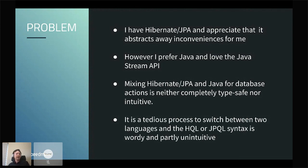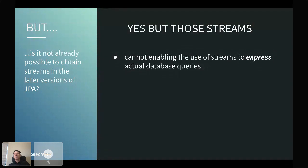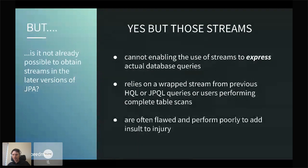So we started thinking: can we do this in a better way? You might think it's possible to obtain streams from JPA as-is — and in fact it is. You can write an expression and get a stream, but you can't express your query as a stream. What's already in JPA wraps a stream from a previous SQL query, and sometimes it even performs a complete table scan. The default implementation materializes everything from the query into a list, and only then invokes a stream — which is a disaster for performance and memory usage.